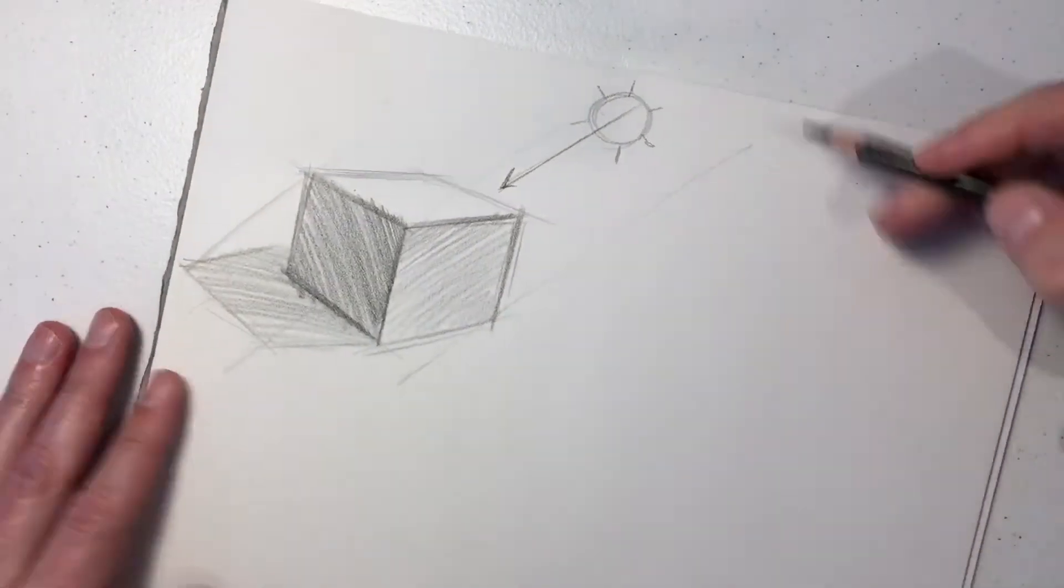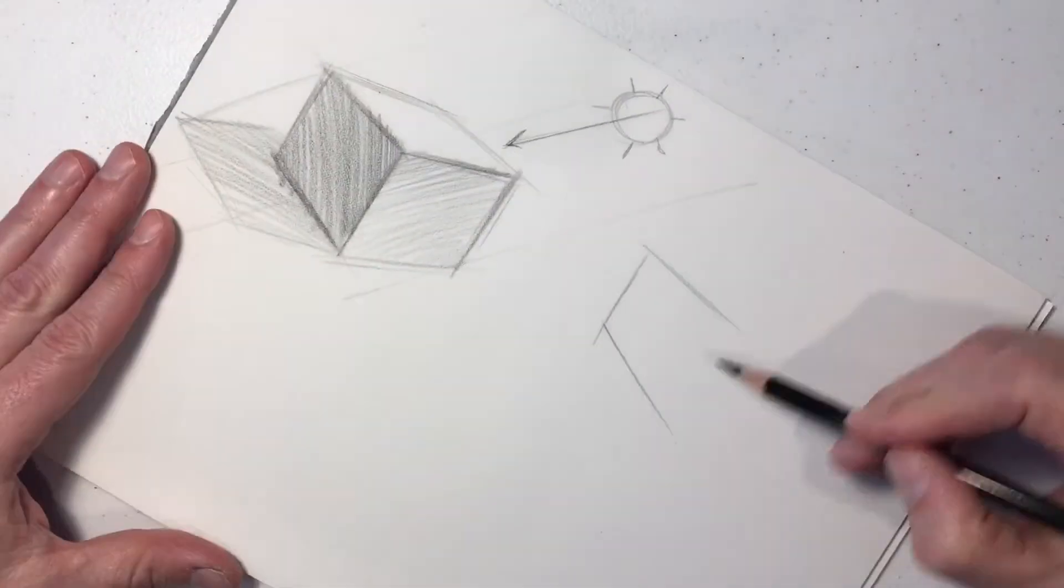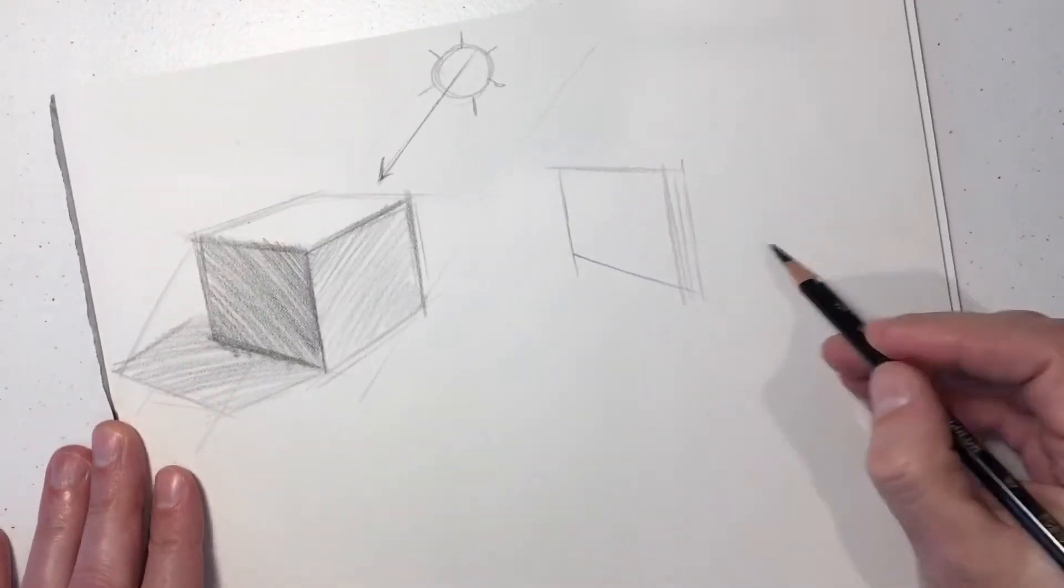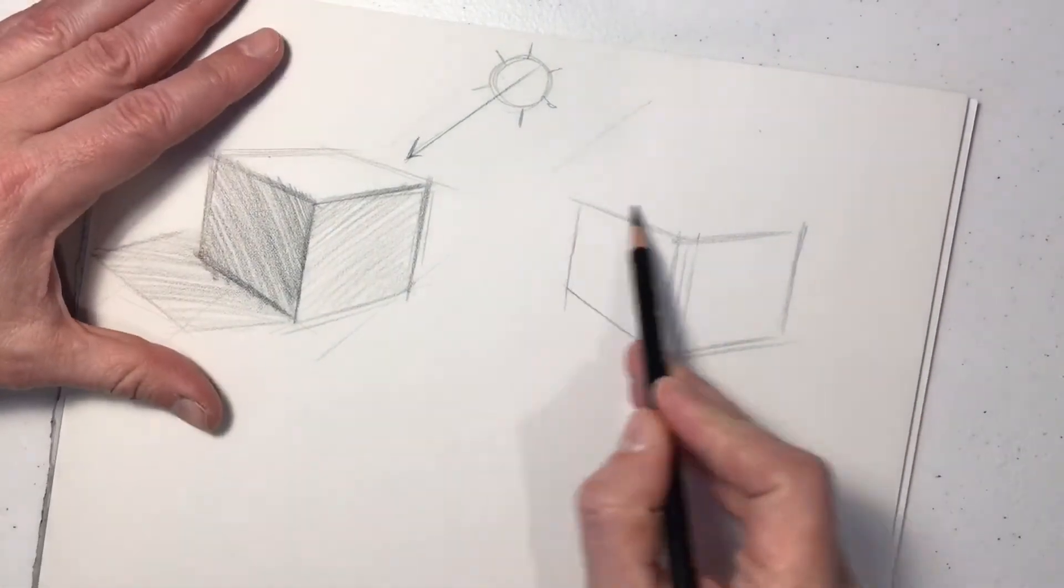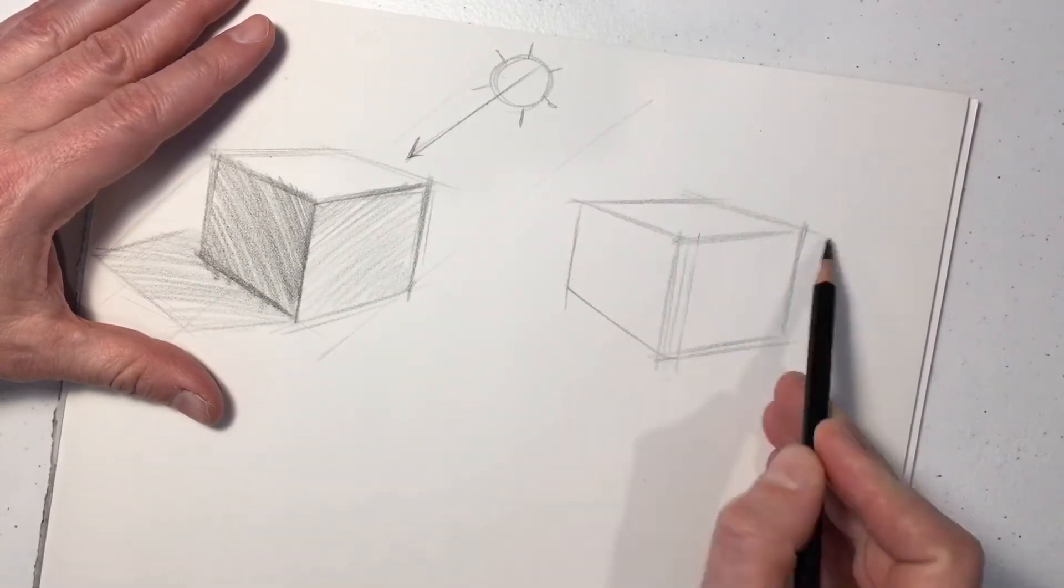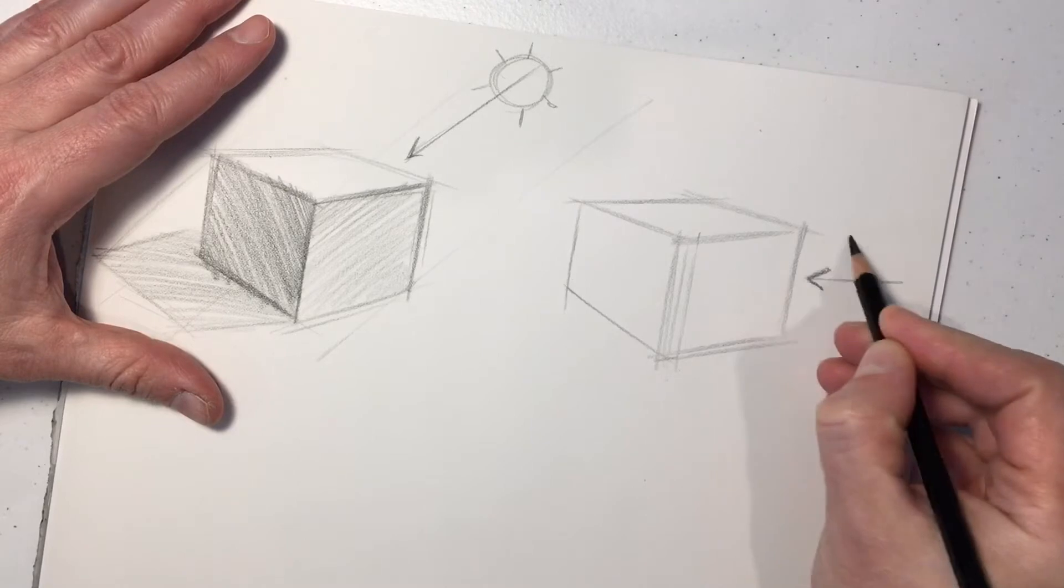Again, I'm just prioritizing the darkness of those sides. The side that's facing the most towards the sun is the brightest. The side that's facing the most away from the sun is the darkest. The side that is partially facing the sun is somewhere in between.